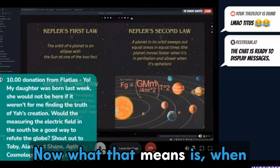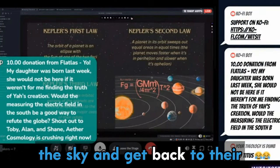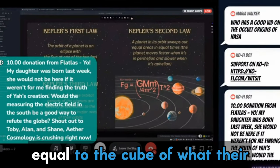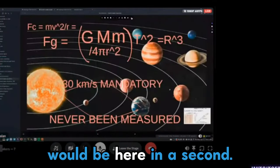Now what that means is when you take their periodicity, how long it takes for them to complete a revolution in the sky and get back to their starting location, you take that, you square it, and that's equal to the cube of what their orbit would be. And we'll get to how we get to what their orbit would be here in a second.